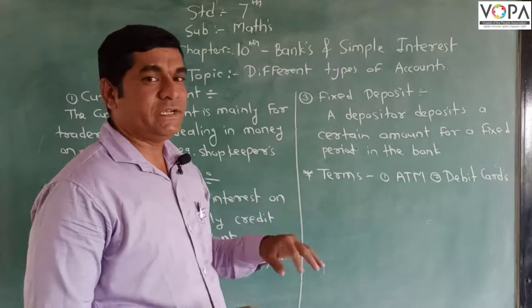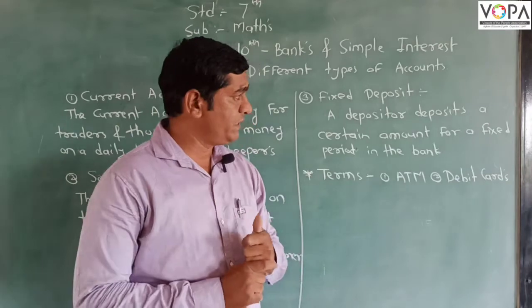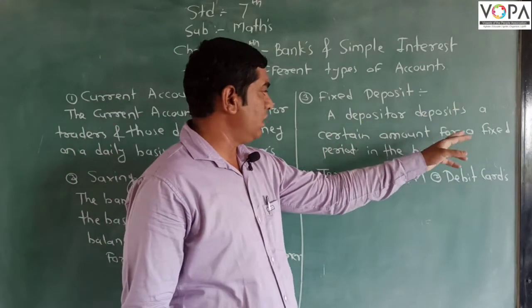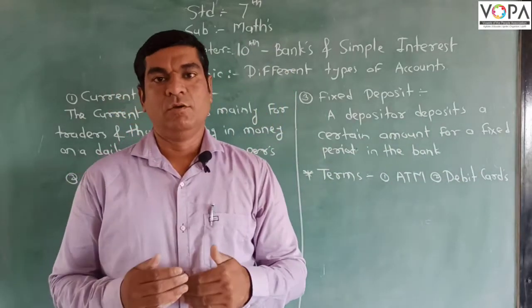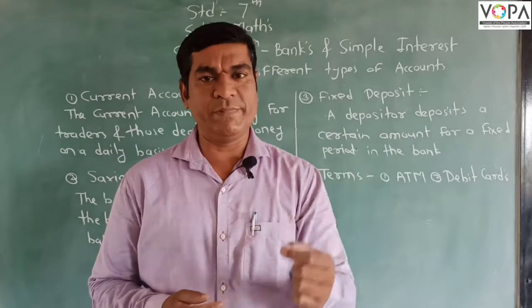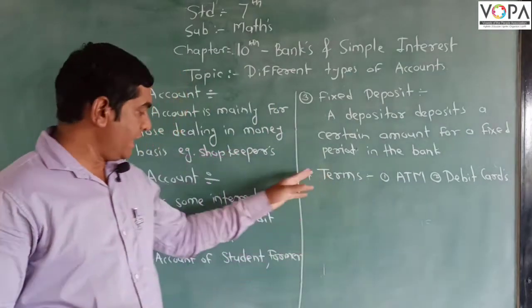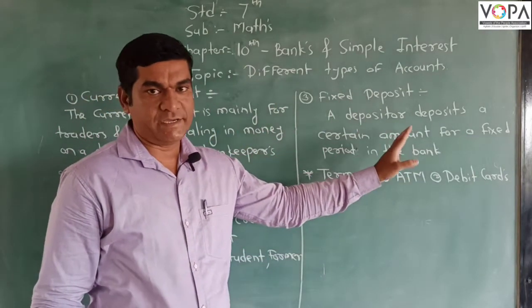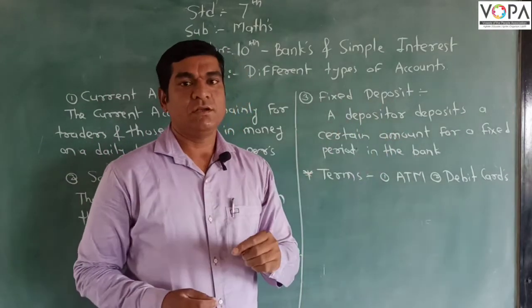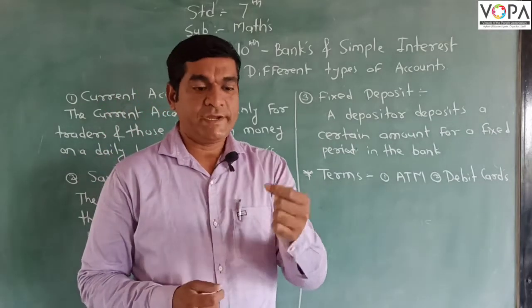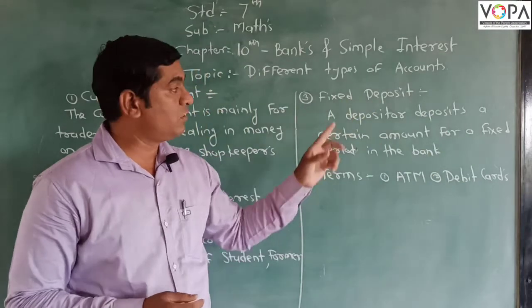The third type is not exactly an account type — it is a type of deposit called fixed deposit. The depositors deposit a certain amount for a fixed period in the bank, such as one year or five years, depending on the opportunity the bank gives. The rate of return on a fixed deposit is greater compared to a saving account, because once you invest for five years, you cannot take this money from the bank until that period ends.